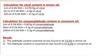Calculation for citral contained in lemon oil: 1 ml of 0.5 N KOH is equal to 0.07672 grams of citral; 50 ml of 0.5 N KOH is equal to 6.9 grams of citral; 100 ml of 0.5 N KOH is equal to 15.5 grams of citral. Calculation for cinnamaldehyde contained in cinnamon oil: 1 ml of 0.5 N KOH is equal to 0.601 grams of cinnamaldehyde; 50 ml of 0.5 N KOH is equal to 0.1 grams; 100 ml of 0.5 N KOH is equal to 0.2 grams of cinnamaldehyde.